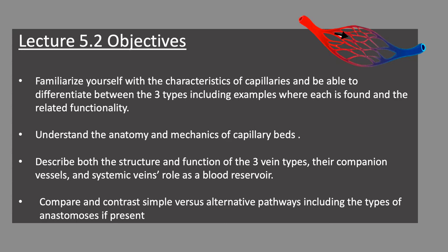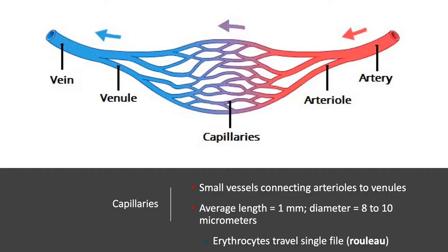We'll begin today by taking a look at the characteristics of capillaries, specifically looking at the differences in permeability between them. We'll differentiate between the three types, where they are found, and how that relates to their function in the body. The capillaries are the smallest blood vessels within the human body, connecting the arterioles — the smallest of the artery types — to the venules, the smallest of the veins.